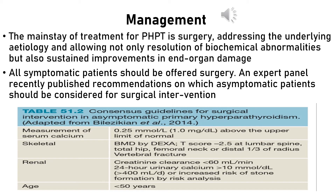Regarding the management of primary hyperparathyroidism, the main treatment is surgery, addressing the underlying etiology and allowing not only resolution of biochemical abnormalities but also sustained improvement in end organ damage. All symptomatic patients should be offered surgery. For asymptomatic patients, an expert panel has published recommendations on which asymptomatic patients should be considered for surgical intervention, including measurement of serum calcium level, bone mineral density by DEXA scan, renal function tests, and age of the patient, as shown in this table.